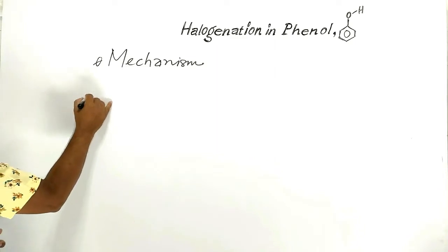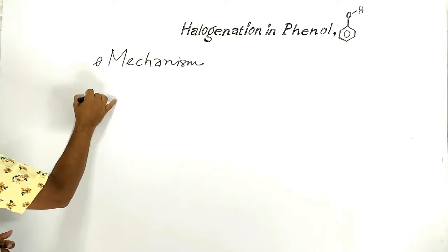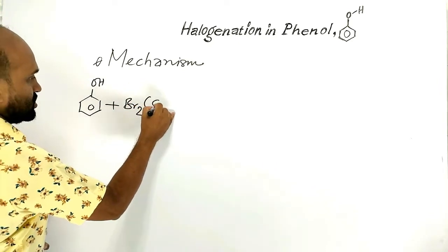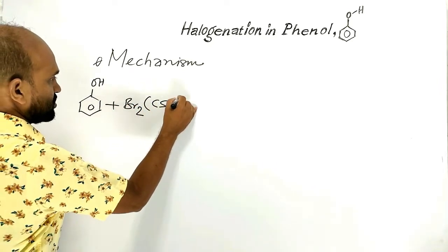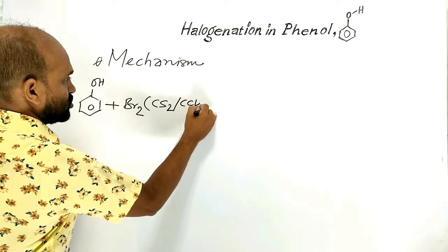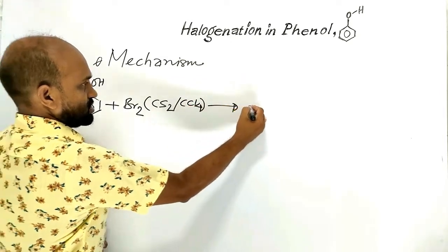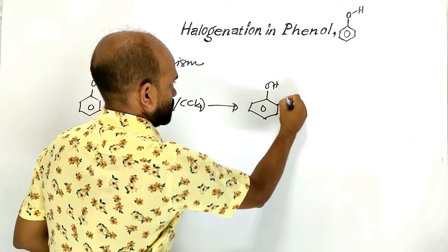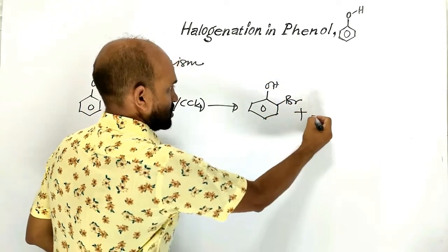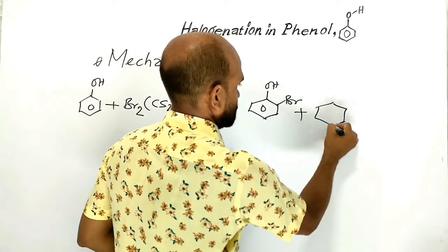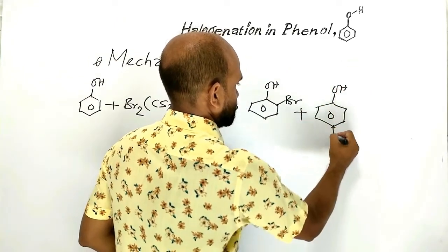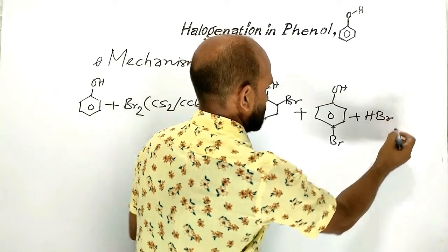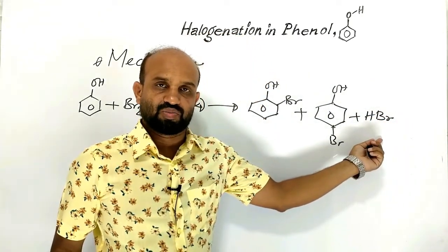Mechanism of bromination: phenol with bromine solution in carbon disulfide or carbon tetrachloride. The products are ortho-bromophenol and para-bromophenol, and hydrogen bromide is formed as a by-product. Let's see the mechanism.